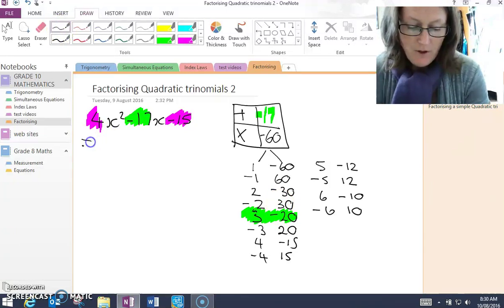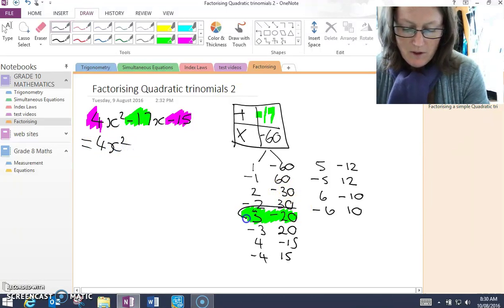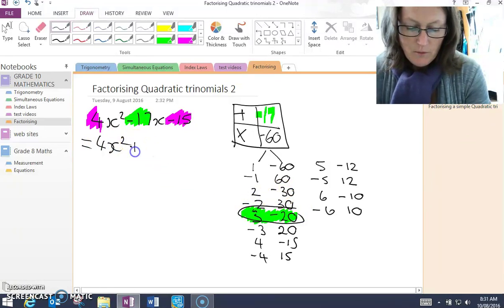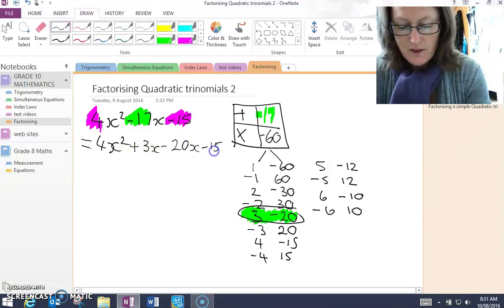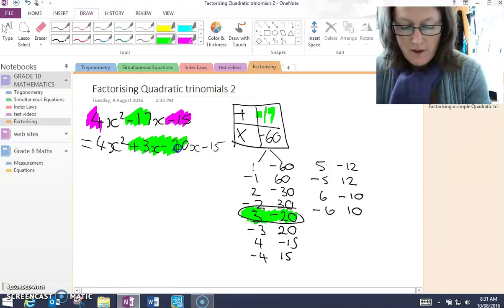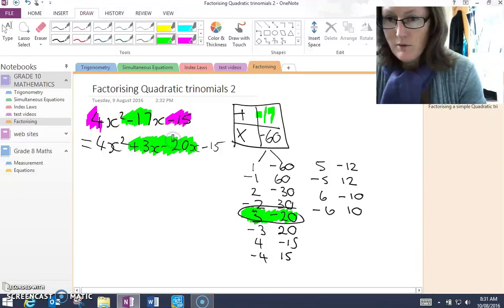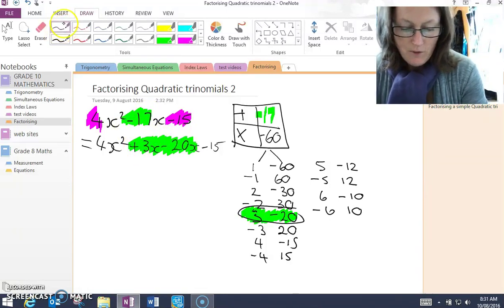So from here, I write 4x squared. Remembering this is what I want. So plus 3x minus 20x minus 15. So looking at what I've written, I've written negative 17x, but just written it in a different way.